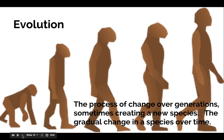To wrap things up, all of this falls under our unit on evolution. Evolution is simply the process of change over many generations that sometimes creates a new species. It's important to emphasize that this is gradual change in a species over time — over a lot of time, sometimes millions of years. It does depend on the species, though. An insect that reproduces every several days could evolve much more quickly, even within a season, whereas a human would not evolve as quickly.